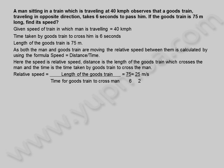75 by 6 is equal to 25 by 2 meters per second.